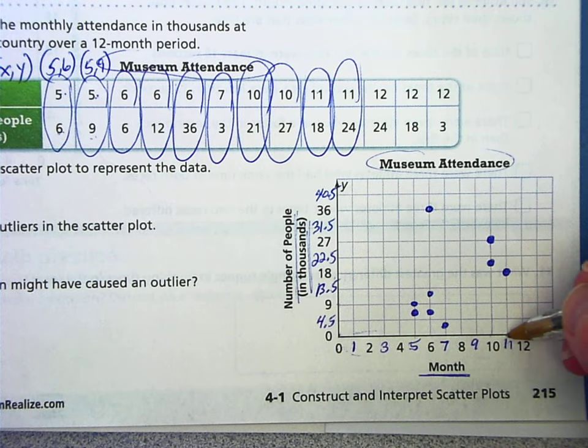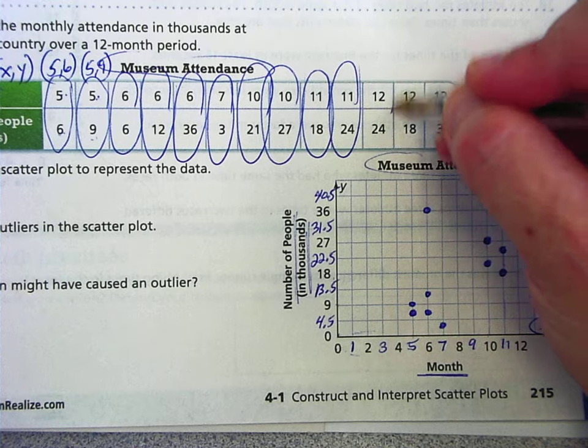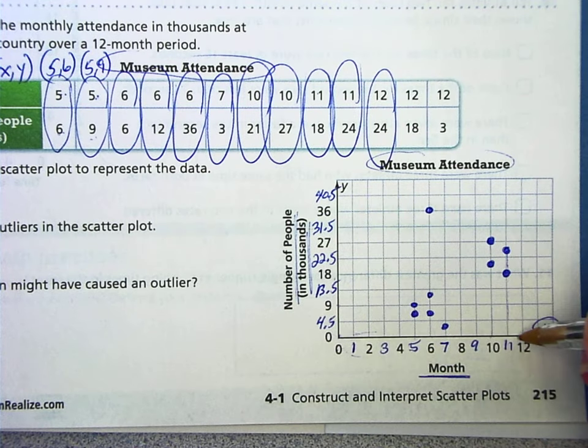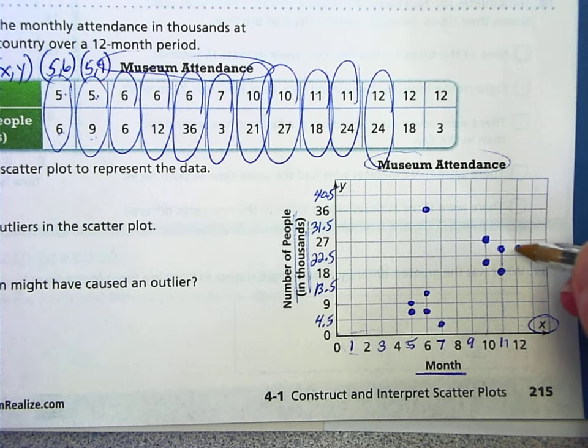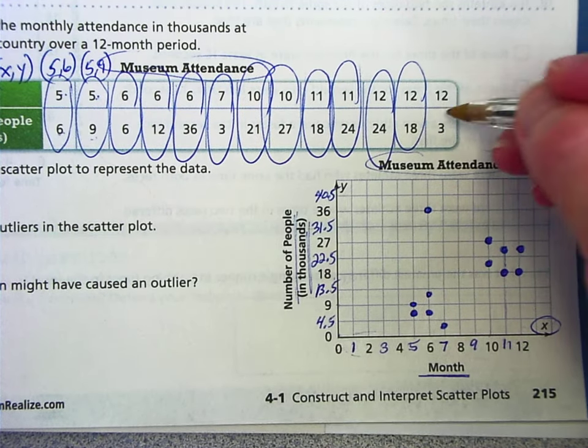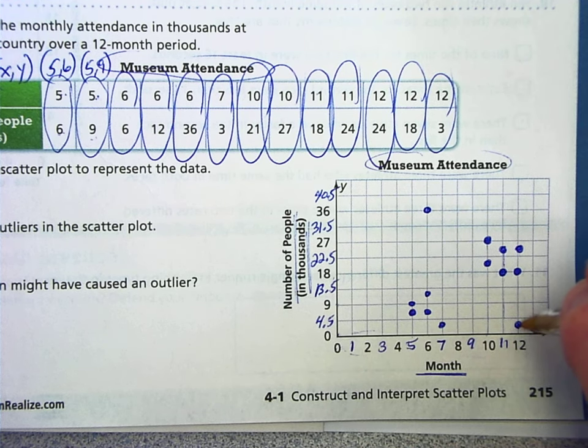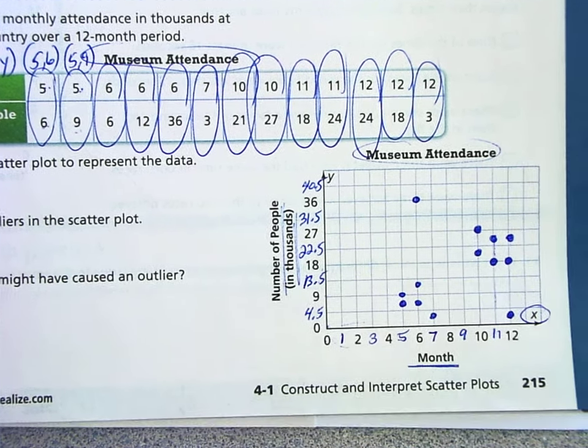11, 24. Over to month 11, up to 24,000 people. 12, 24. Over to month 12, up to 24. Okay. 12, 18. Over to month 12, up to 18. And then 12, 3. Over to 12, up to 3, which would be about right there. Okay. So that is constructing a scatter plot.